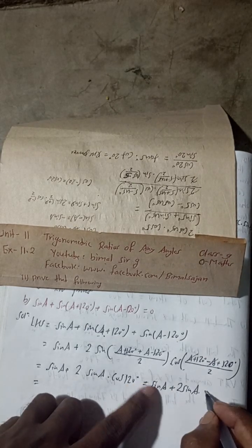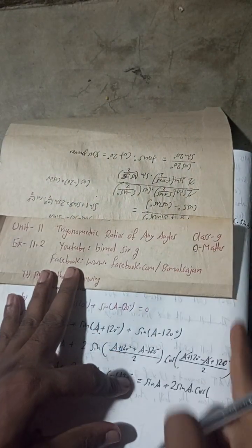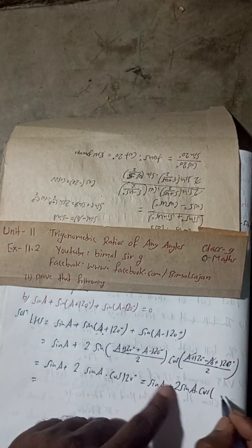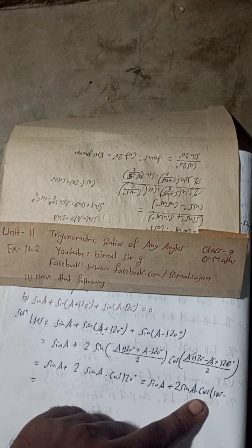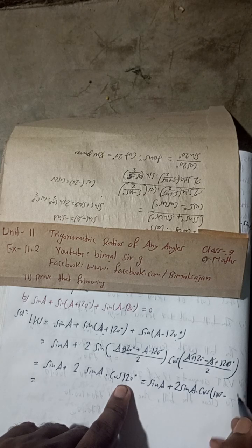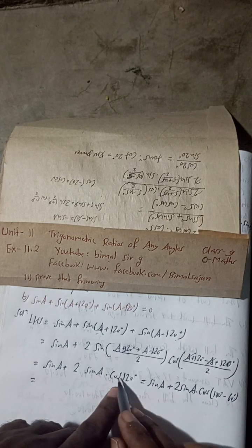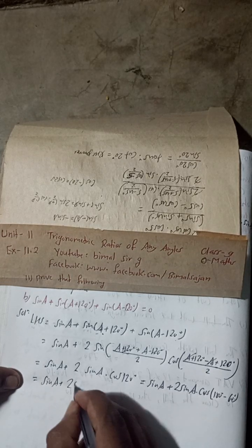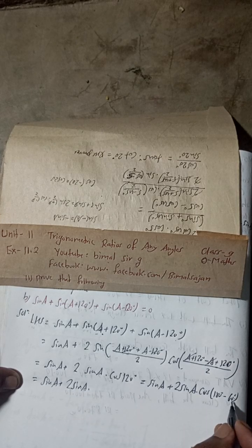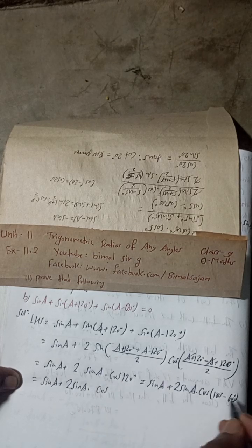Now cos(120°) can be written as cos(180° − 60°). Since cosine is negative in the second quadrant, cos(180° − 60°) = −cos(60°). So we have sin(A) + 2 sin(A) × (−cos(60°)).